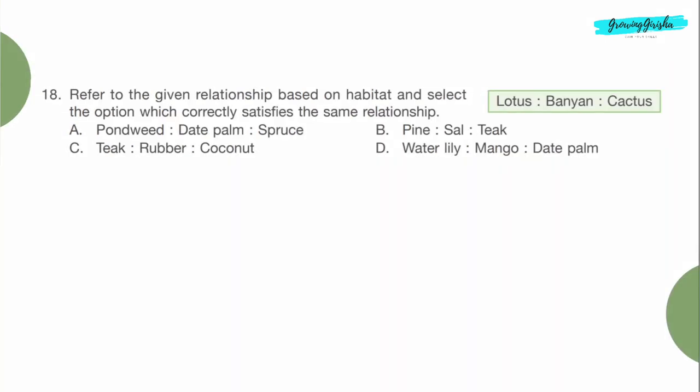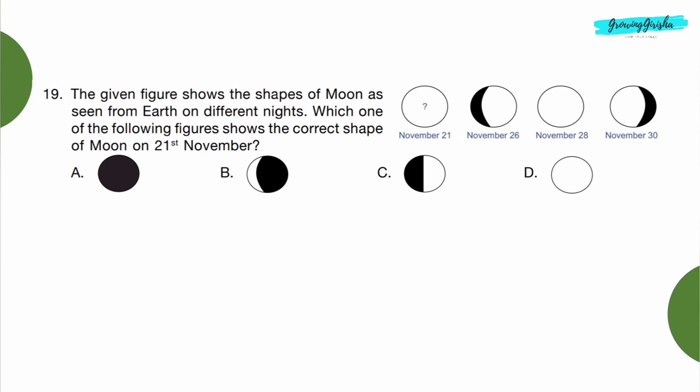Question 18: Refer to the given relationship based on habitat and select the option which correctly satisfies the same relationship. Lotus, banyan, cactus. Water lily and lotus are aquatic plants. Mango and banyan are tropical trees, and cactus and date palm are desert plants, so Option D is the correct answer. Question 19: The given figure shows the shapes of moon as seen from Earth on different nights. Which one of the following shows the correct shape of moon on 21st November? On 28th November there was full moon. On 26th November there was gibbous moon, so on 21st November there was half moon. Option C.